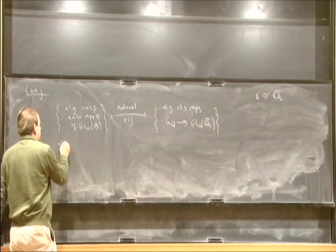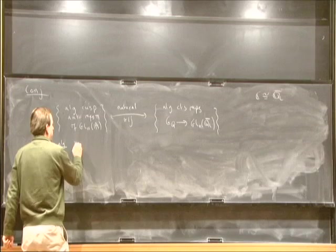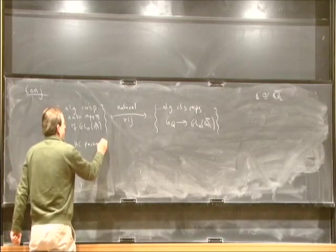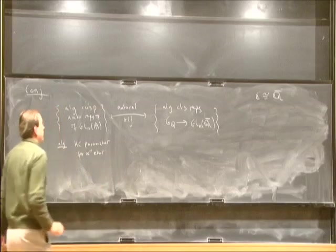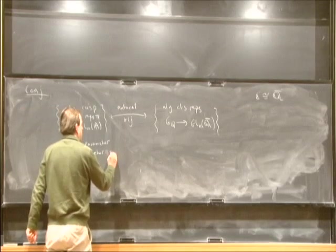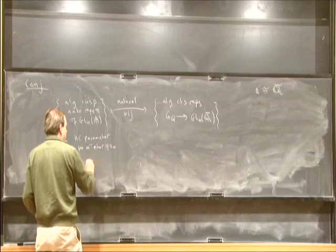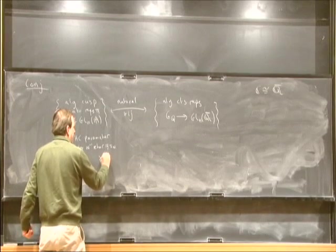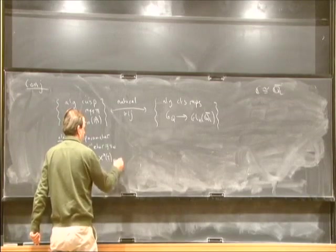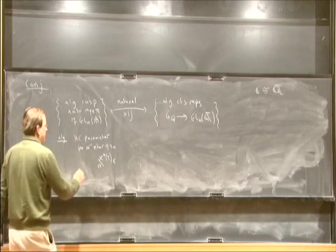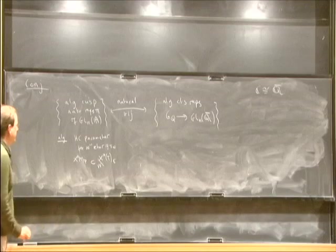I should explain what the word 'algebraic' means on both sides. On the automorphic side, it means that the Harish-Chandra parameter for the infinitesimal character of pi-infinity — how the center of the universal enveloping algebra acts on pi-infinity — which a priori is in the complexified character group of a maximal torus, just as C^N modulo the action of the Weyl group, the symmetric group on N letters, is integral, or depending on normalizations, you add half the sum of the positive roots.